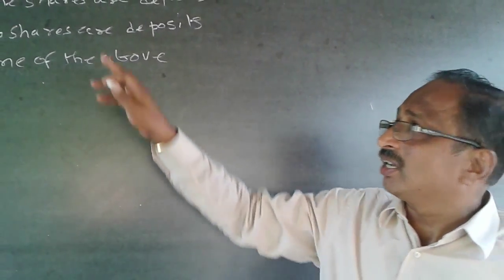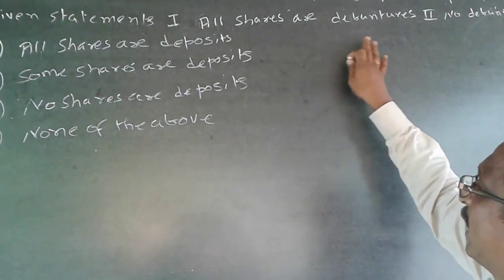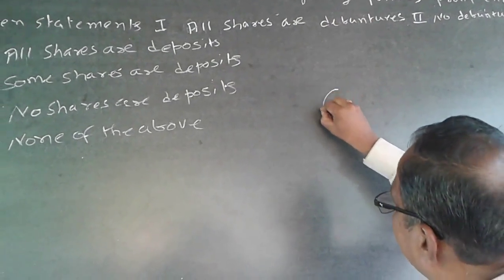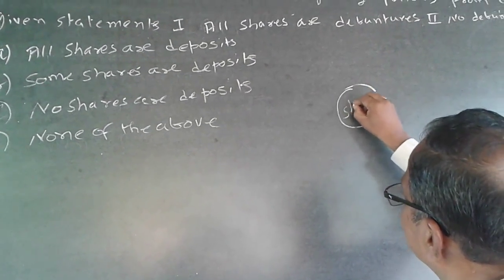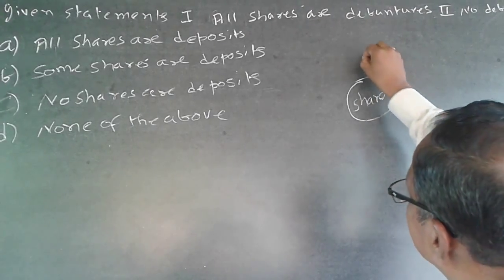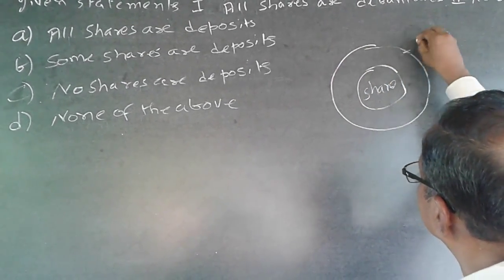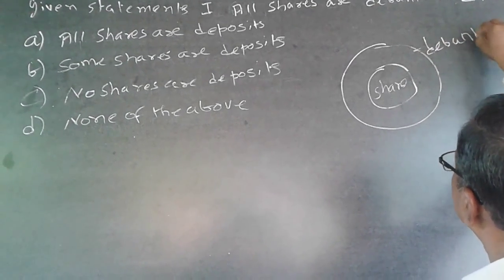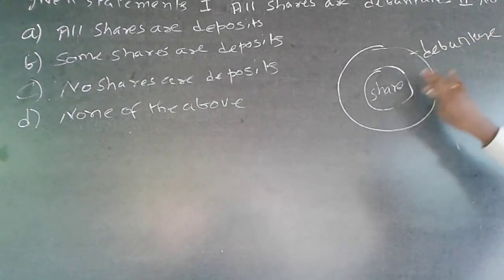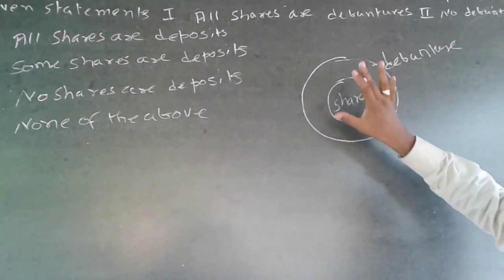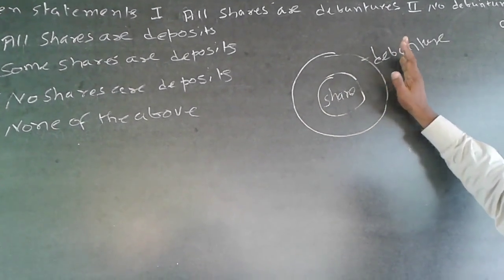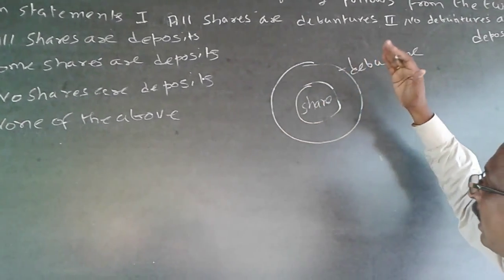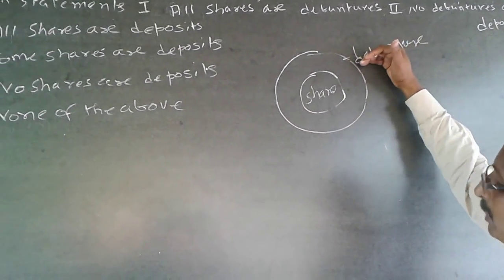So what happens is here, it says all shares are debentures. So share will become a subset of debentures. These are all shares. The outer circle will be debenture. So all shares are debentures. What I am 100% sure is all my shares will be debentures, but I cannot say all debentures are shares. But I can definitely say some debentures are shared.